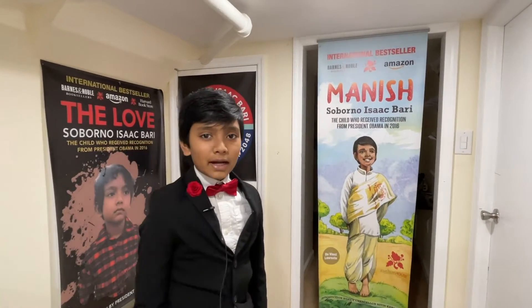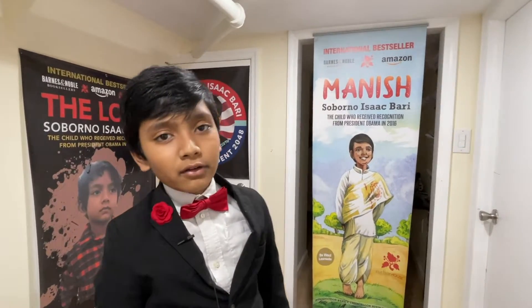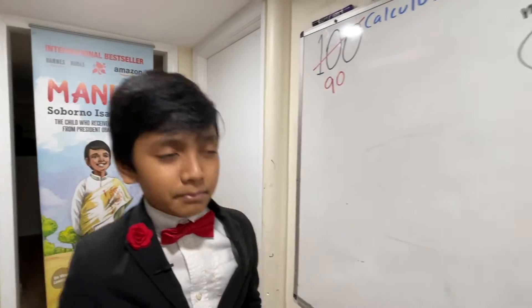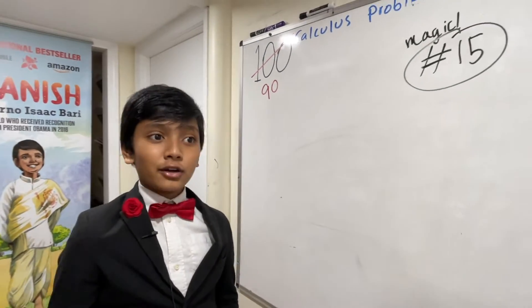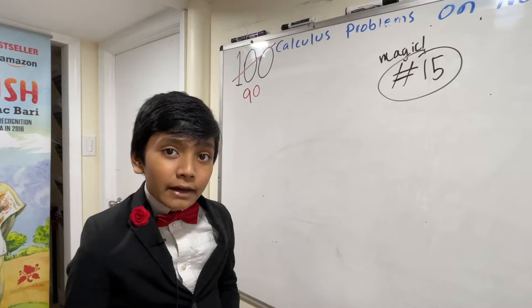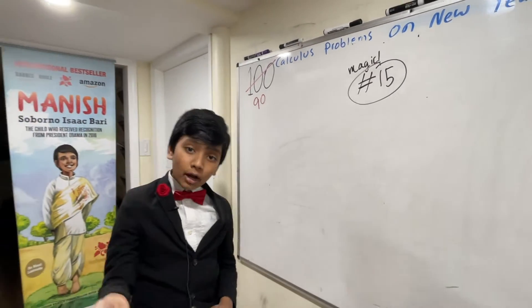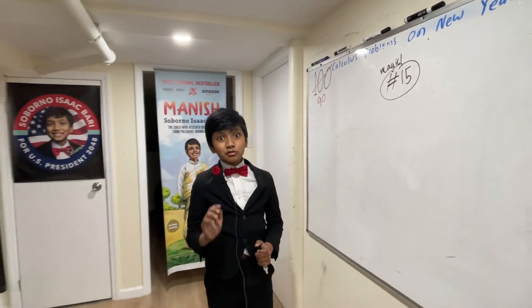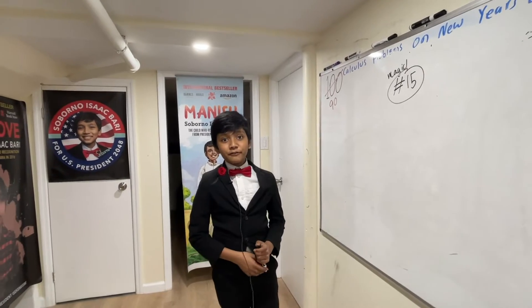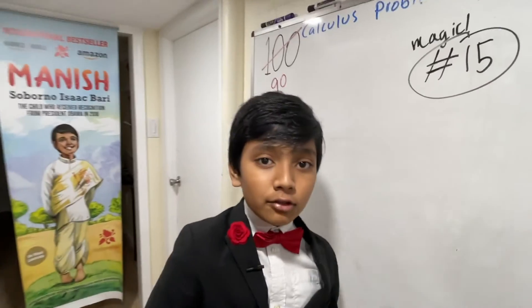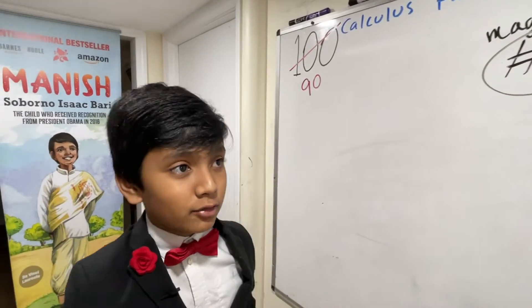Hello everybody, my name is Isaac Barry — welcome to Barry's Science Lab. Today we're doing 15. 15 is a very interesting number: 15 is a magic square constant, 15 is a semi-prime, and 15 is a triangle number. What's even cooler is that 15 and 27 are the only two numbers to share one unique property.